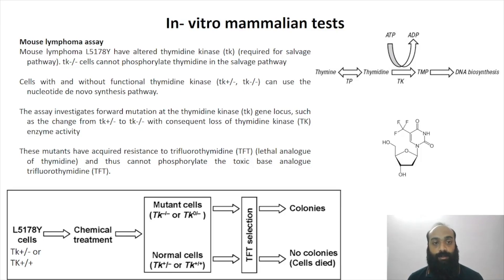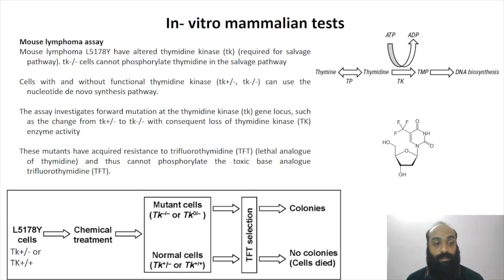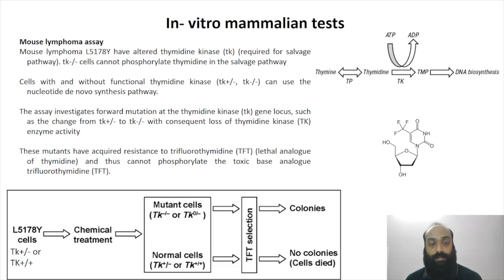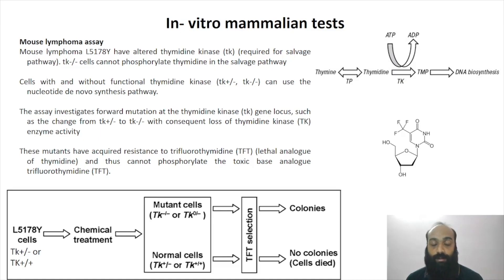The first test we're going to talk about is the mouse lymphoma assay, which is an in vitro test because we are going to be culturing the mouse lymphoma cells. Specifically, the cell line L5178Y is used, and what is special about these cells is that they have an altered thymidine kinase gene — the TK gene — which is required for the salvage pathway of nucleotide synthesis.